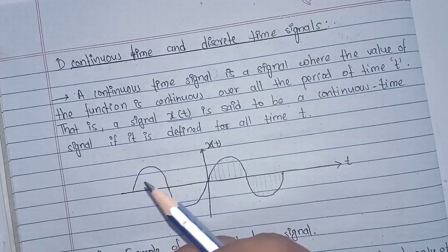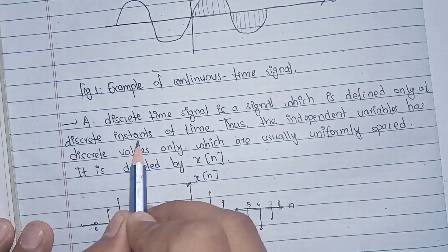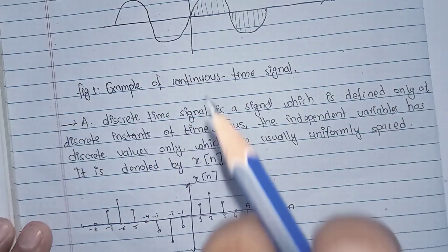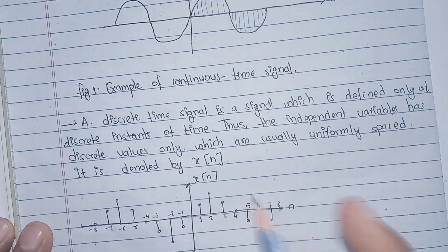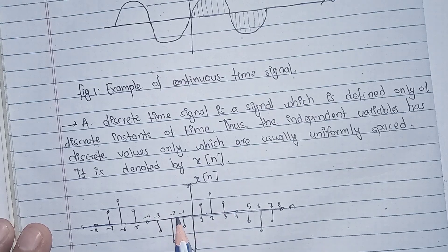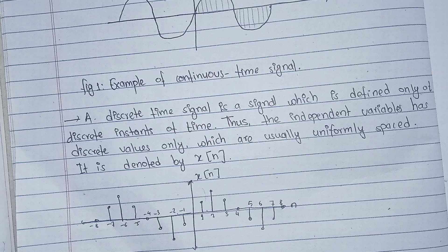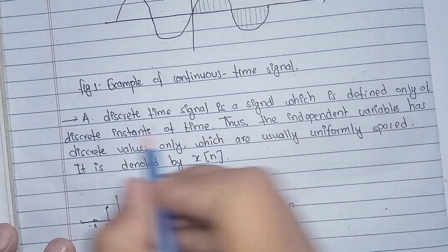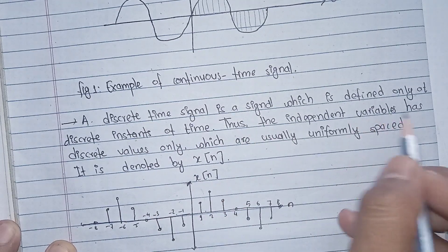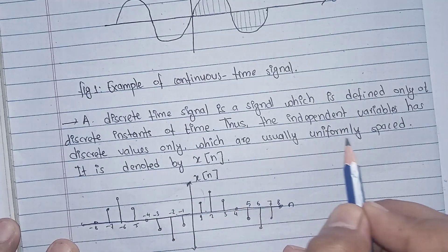The discrete time signal is a signal which is defined only at discrete instants of time. This means the time period is defined at a sampling period — for example, at values of 1 second, 2 second, 3 second, 4 second. The independent variable has discrete values only, which are usually uniformly spaced.